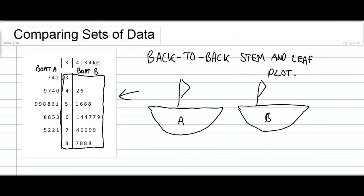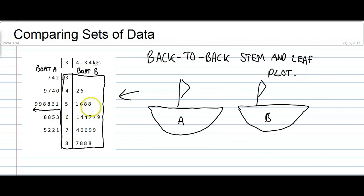The same thing has to happen on the left. As you get further away from the stem, the numbers get bigger. But on the left-hand side, that's going to mean that reading from left to right, we're going from bigger to smaller, whereas on the right, we're going from smaller to bigger. The general rule to remember is: on both sides, you have the smallest numbers close to the stem, and as you go away from the stem, the numbers get bigger. That allows for the best comparison of the two sets of data.